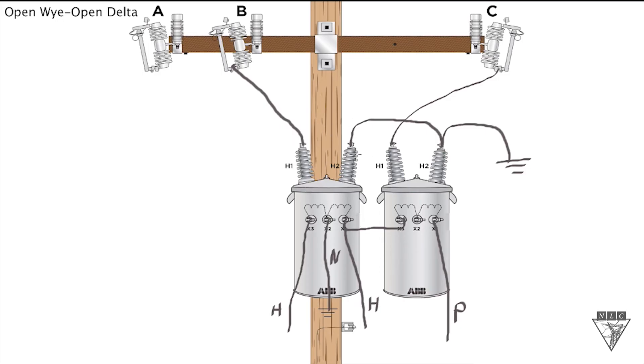Now this particular connection right here, if you look, we've got the H2 bushings connected together, and then on the bottom side we've got the X1 is connected to the X3. So this type of connection in this open Y open delta bank, it's called the same opposite connection. See if I can get it to look more like an I. It's the same opposite. Reason why?